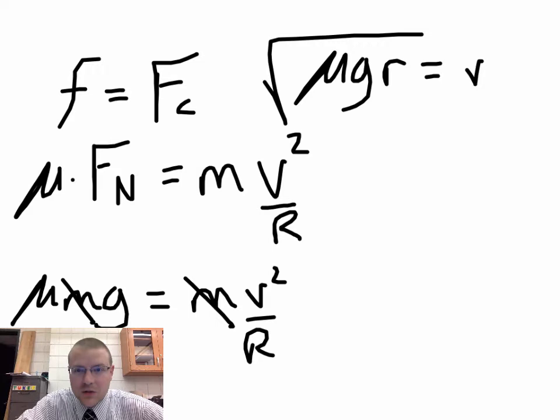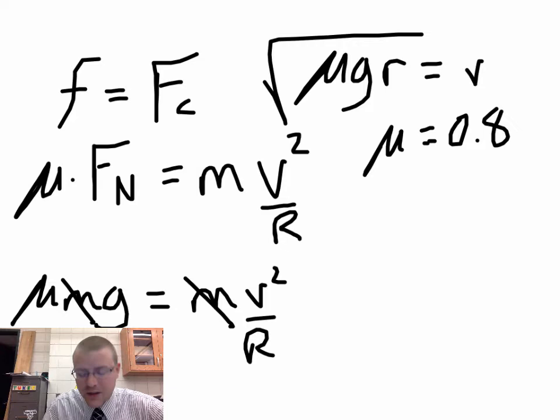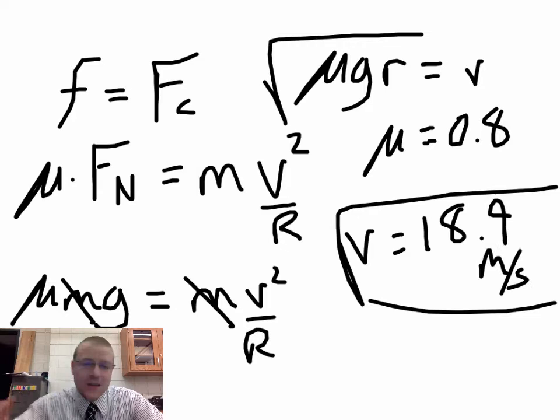In our example, the radius is 45.7 m and we'll use μ = 0.8 for decent tires. Crunching out √(0.8 × 9.8 × 45.7) gives a safe velocity of about 18.9 meters per second, which is around 40 miles per hour as the safe speed to round that bend.